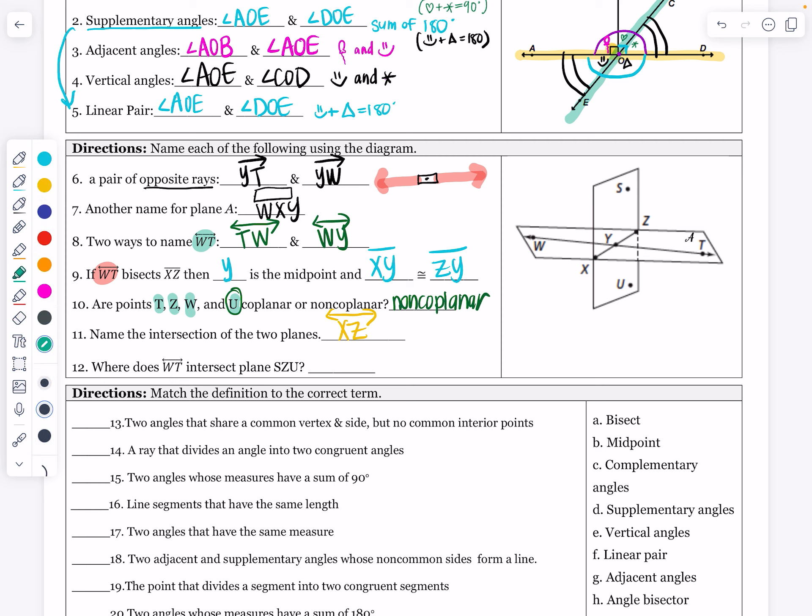Where does WT - here's WT, that line - where does that intersect plane SZU? Here's plane SZU. S, there's Z, so SZU. Where does it intersect that plane? Well, where does that go through it? It's going straight through it like a dart at point Y. So that's happening at point Y. You don't have to do the little point symbol, I just did to show it crosses at a point. That is the second section for questions 6 through 12.